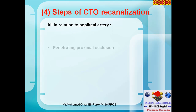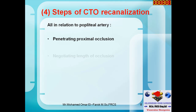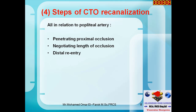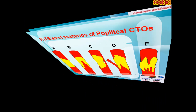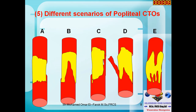The steps of CTO re-canalization are basically three: penetration of the proximal occlusion, negotiation through the length of the occlusion, and re-entry back to the true lumen.